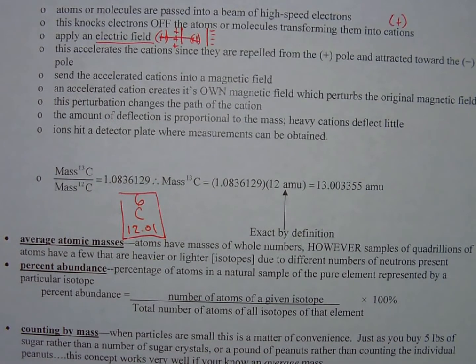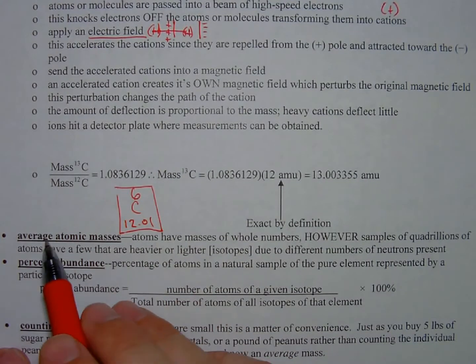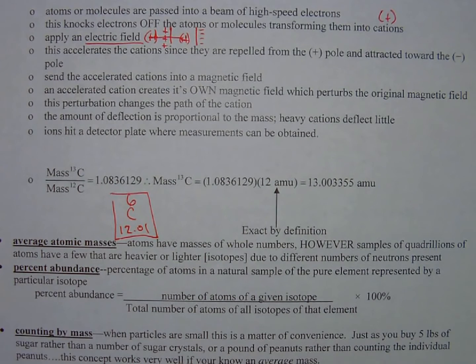But atoms, the individual atoms have masses of whole numbers. That's not a whole number. This is an average. Individual atoms have masses of whole numbers. However, samples of quadrillions, huge numbers of atoms, have a few atoms that are either heavier or lighter because they're isotopes. They have varying numbers of neutrons due to different numbers of neutrons present.